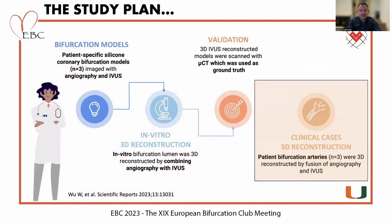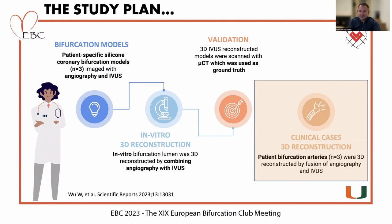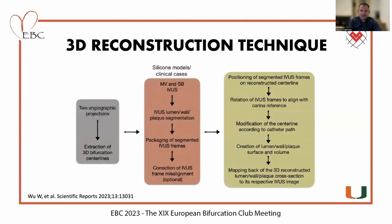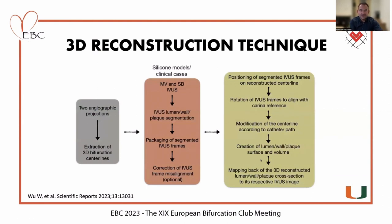What was the study plan? We had an in vitro component and a clinical component. For the in vitro component, we used bifurcation-specific silicone models, 3D reconstructed those by combining angiography with IVUS, and then validated those 3D reconstructions against micro-CT imaging of the models. We then translated this technique clinically to 3D reconstruct bifurcations from patients using the combination of IVUS with angiography.